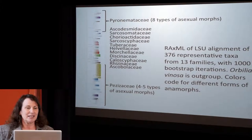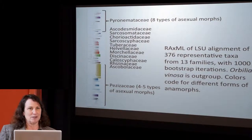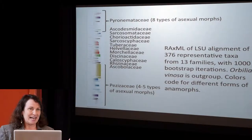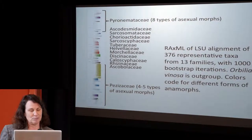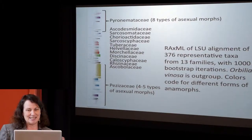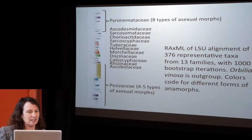What I did was comb the literature to look for all species where anamorphs had been connected to teleomorphs in the Pezizales. Those which had large subunit sequences I put into an alignment of 376 taxa, not all of which were anamorph producers, but just to have a representation of the Pezizales — although I did leave out three families that have not been shown to produce anamorphs: Carbomycetaceae, Glasiolaceae, and Carstenolaceae.